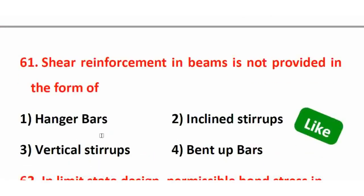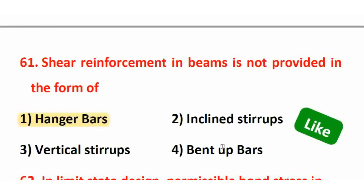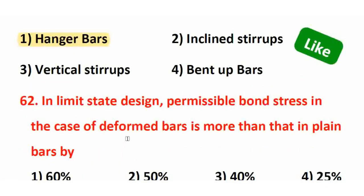Next question: Shear reinforcement in a beam is NOT provided in the form of? The right answer is option A — hanger bars. Shear reinforcement in beams can be provided as vertical stirrups, inclined stirrups, and bent-up bars. Hanger bars are not a form of shear reinforcement.